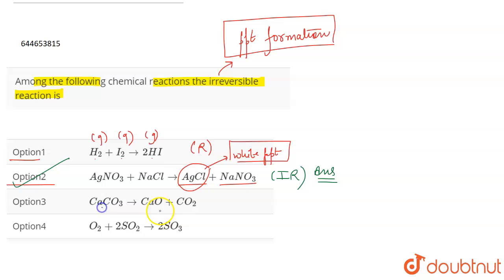CaO is a solid, CO₂ is a gas. In this case, what happens is that this reaction can be reversed. We can combine CaO and CO₂ and it can lead to the formation of CaCO₃.